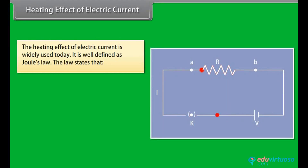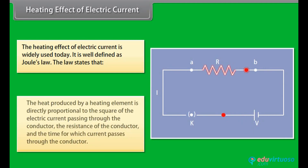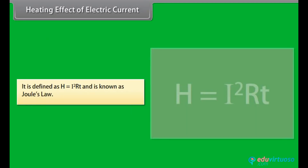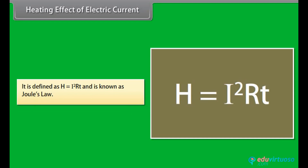The heating effect of electric current is widely used today. This effect is caused when electric current is passed through a conductor, generating heat due to the resistance it offers to current flow. The work done in overcoming this resistance produces heat. The heat produced is directly proportional to the square of the electric current, the resistance of the conductor, and the time for which current passes. This is defined as H = I²RT, known as Joule's Law.